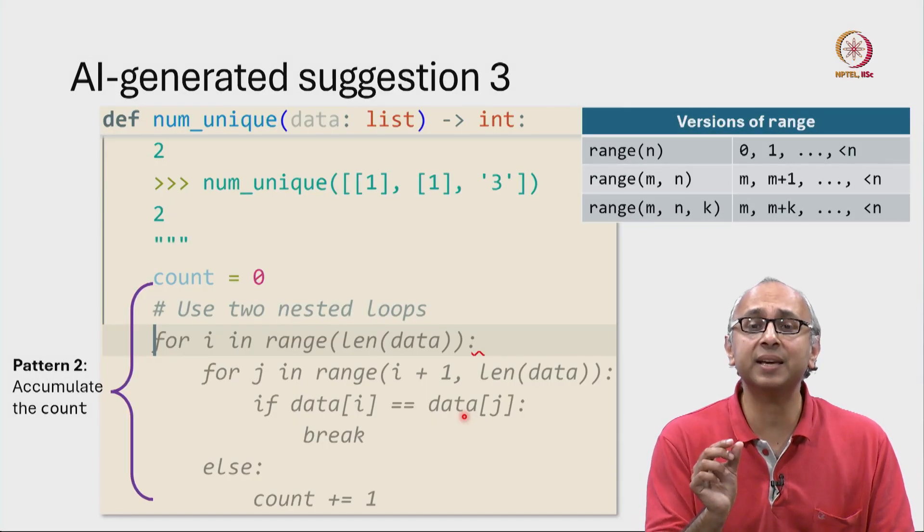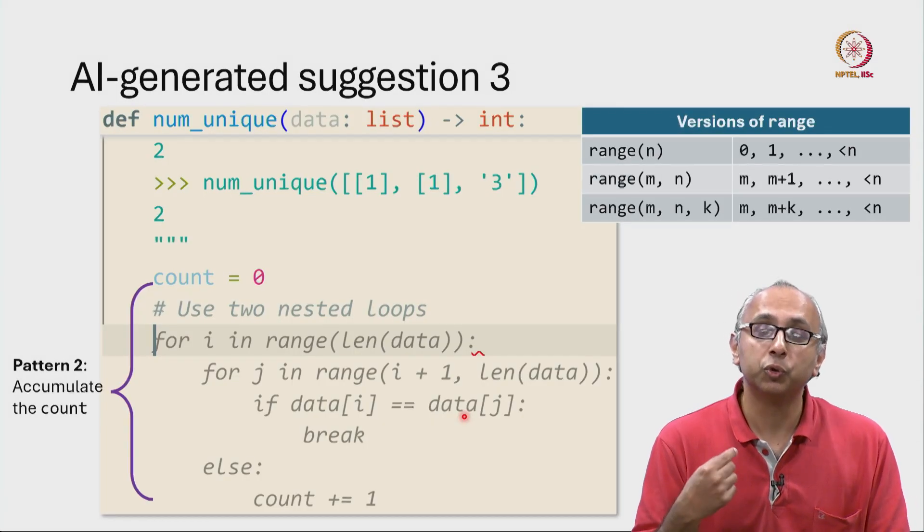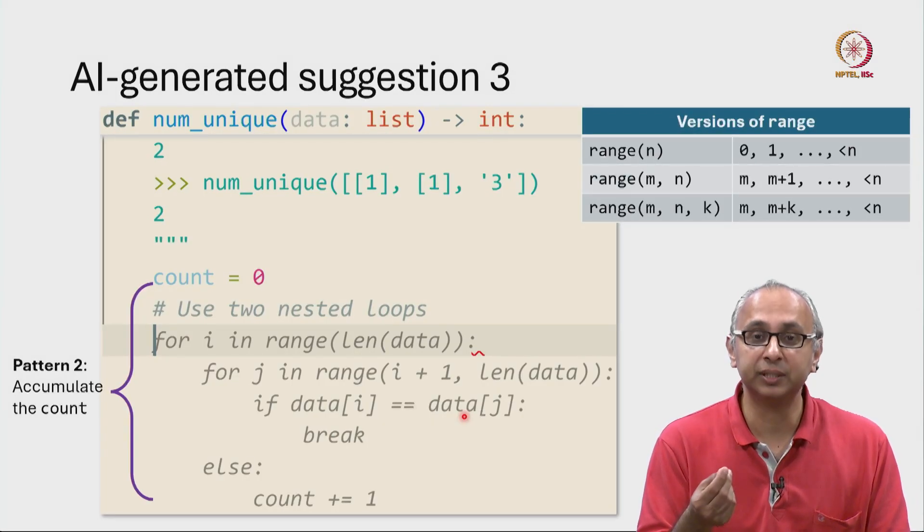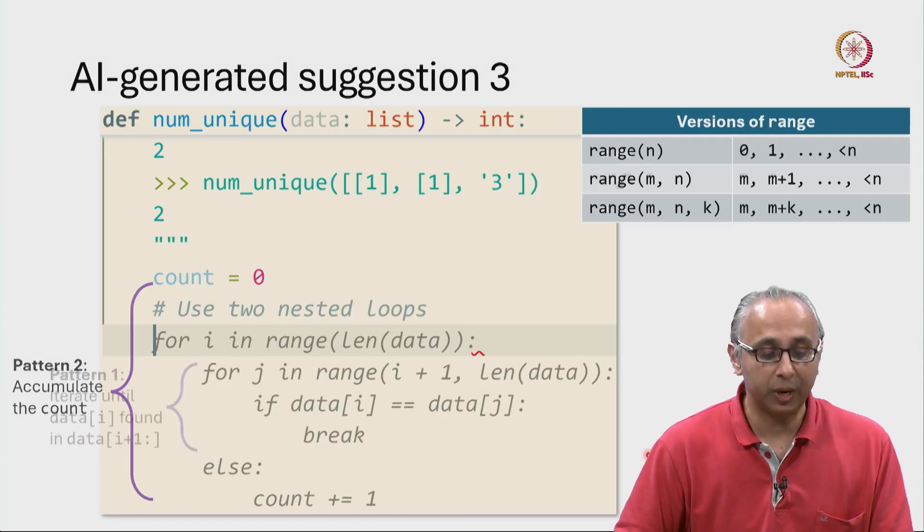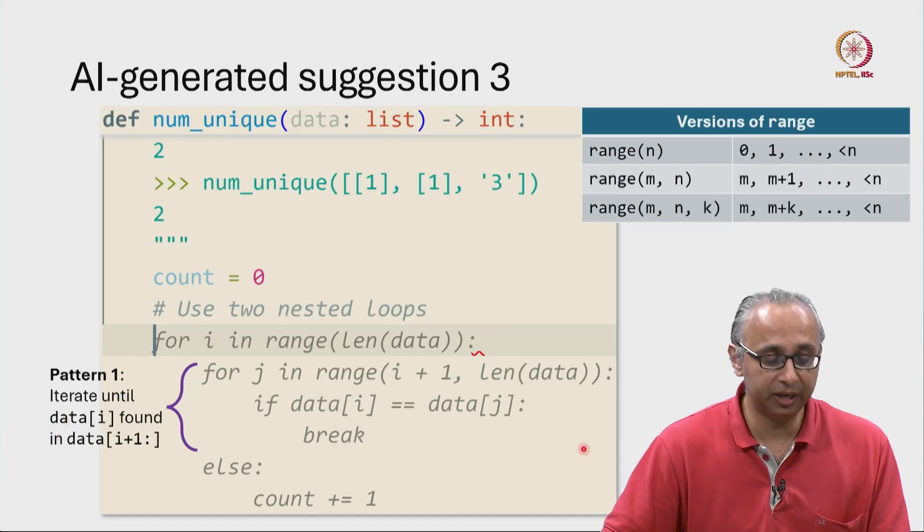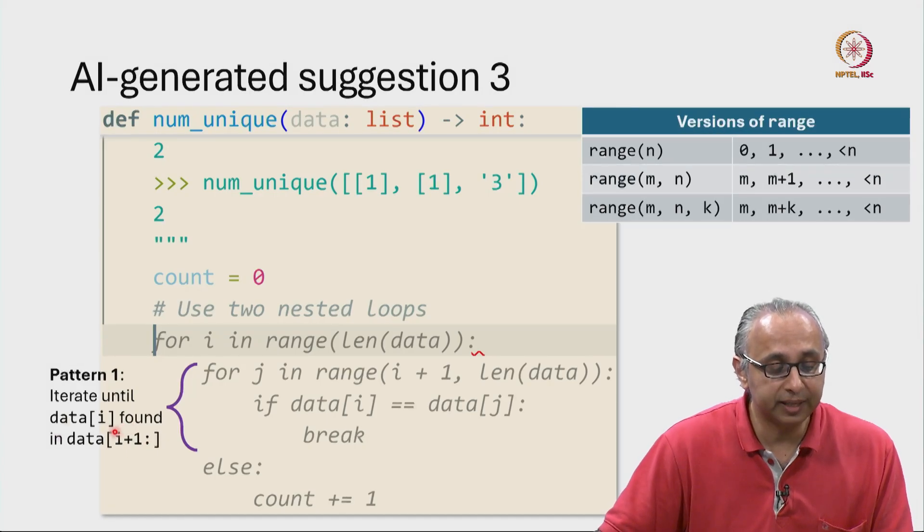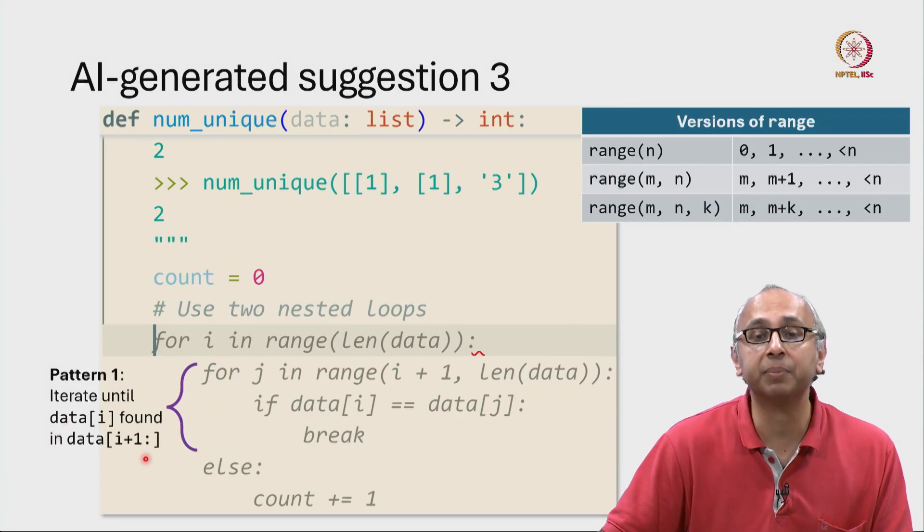That means index i is the last occurrence of this value in this list. So, this code will count this value only once at its last occurrence. So when we try and understand the inner for loop, we find that it's basically searching for the value data i in this slice starting at index i plus 1 all the way to the end.